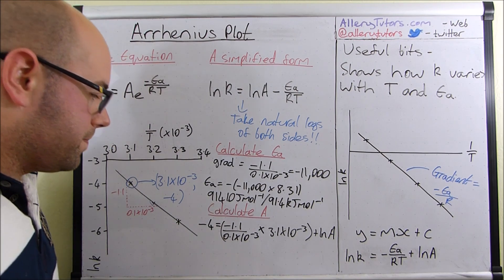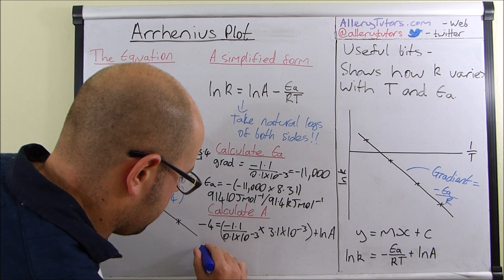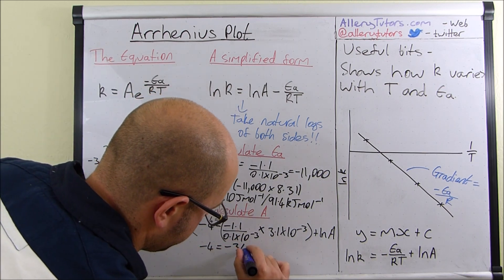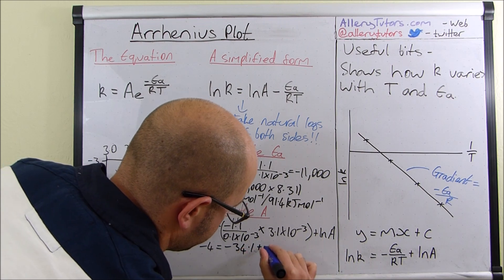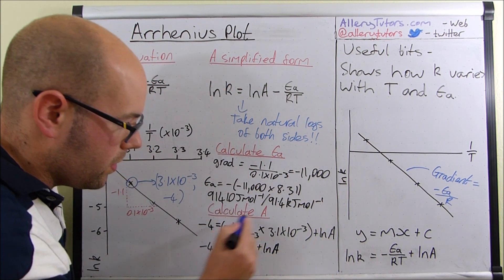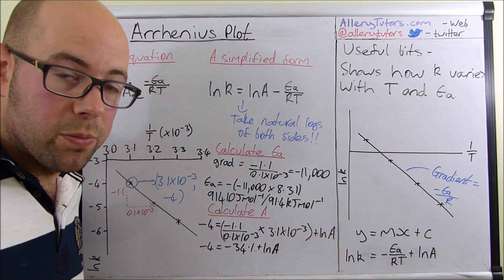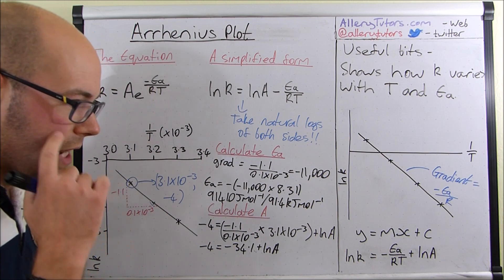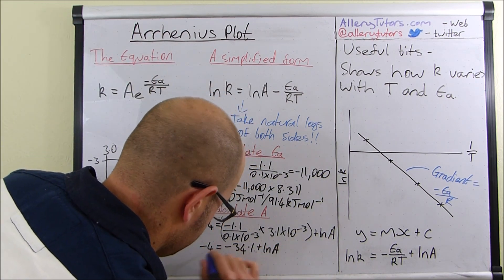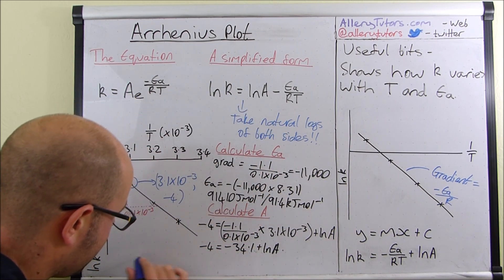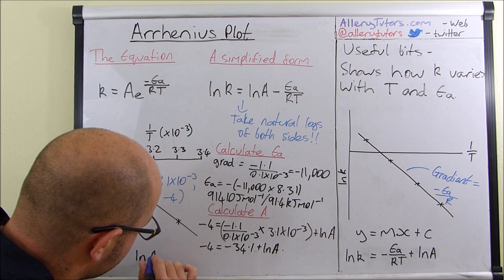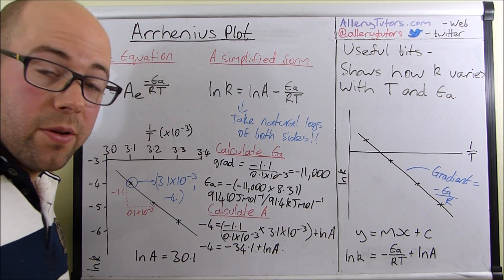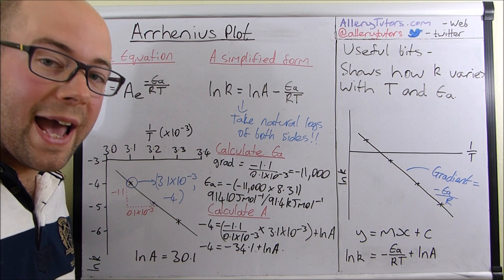If we put that into our calculator we should get: minus 4 equals minus 34.1 plus lnA. Rearranging, bringing the minus 34.1 across to the other side turns it to a positive, so lnA equals 30.1. That is the value of lnA.